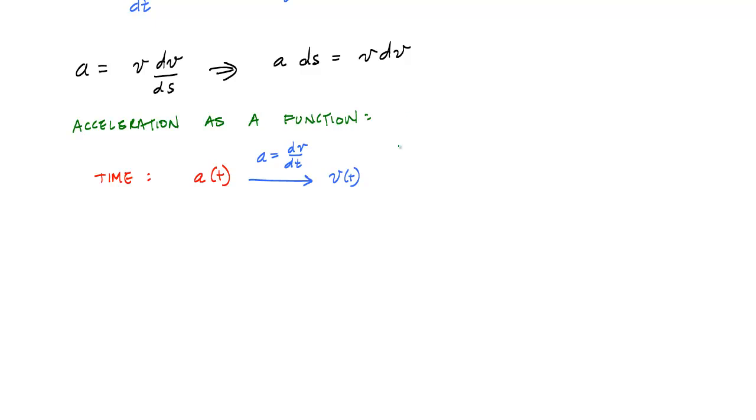And then you would apply the definition of velocity, v is equal to ds dt, integrate again, and you would have the position as a function of time. And this is how you would start from acceleration as a function of time to get the velocity and the position as a function of time.